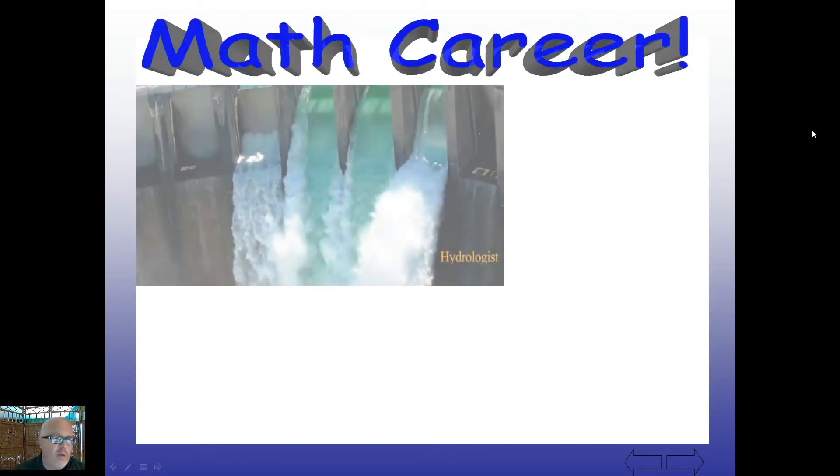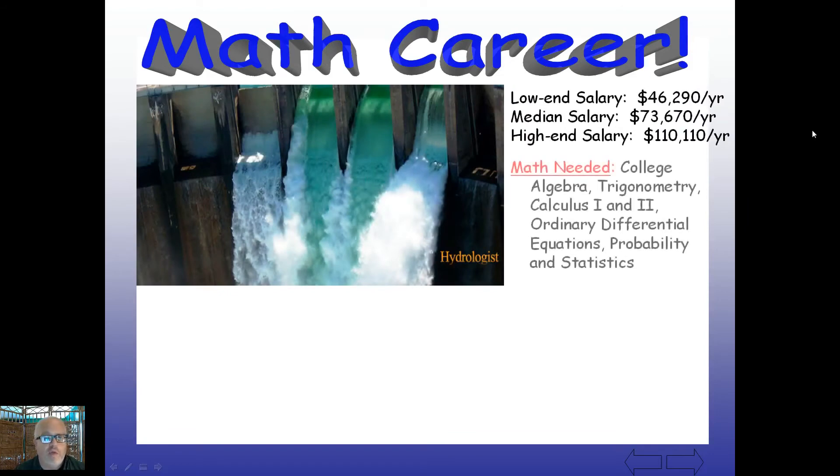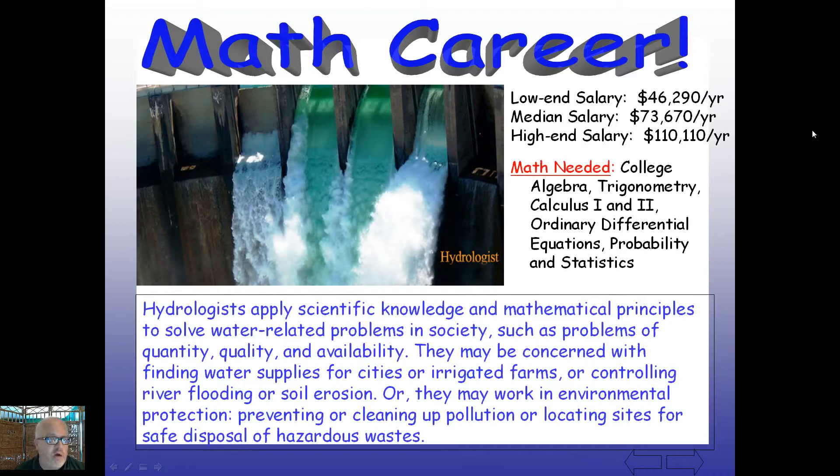First, our math career. How about hydrologists? A hydrologist, these are people who apply scientific knowledge and mathematical principles to solve water-related problems in society, such as problems finding quantity, quality, and availability. Of course, water is something that goes without saying that everybody in the whole world needs, both forever and forever and ever. So this is an important job and a very valuable career and probably quite rewarding. You can see your mathematics you need here, and you can see your salary structure here. Pretty healthy. Probably some research, probably some traveling, different things involved, depending on who you're working with and for. Fun job, probably.